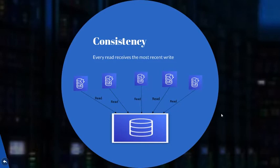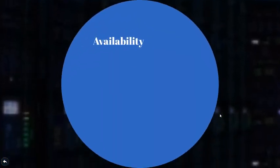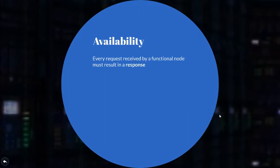Let's move on to the next property, which is A, and A is for availability. By availability, we mean that whenever a request hits a functional node, it either receives a valid output or a valid error code.